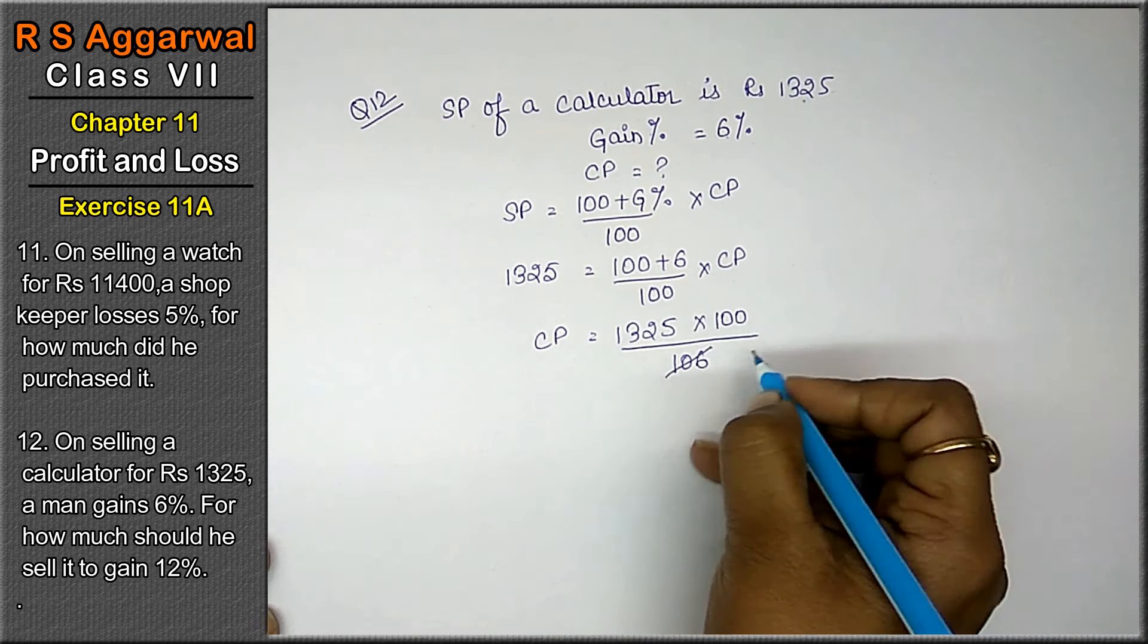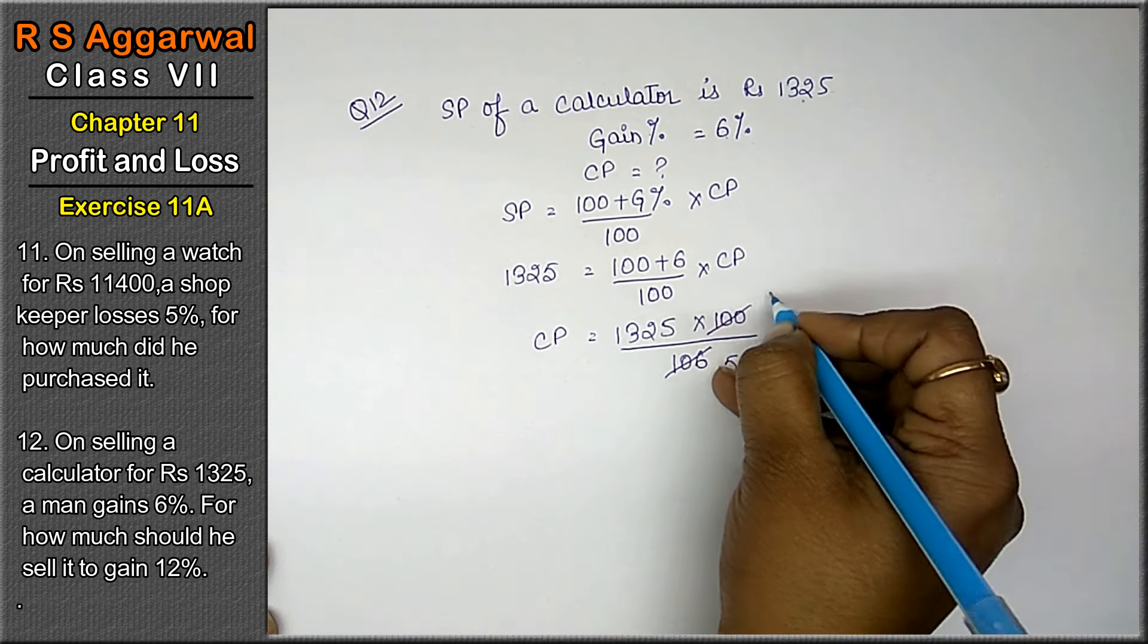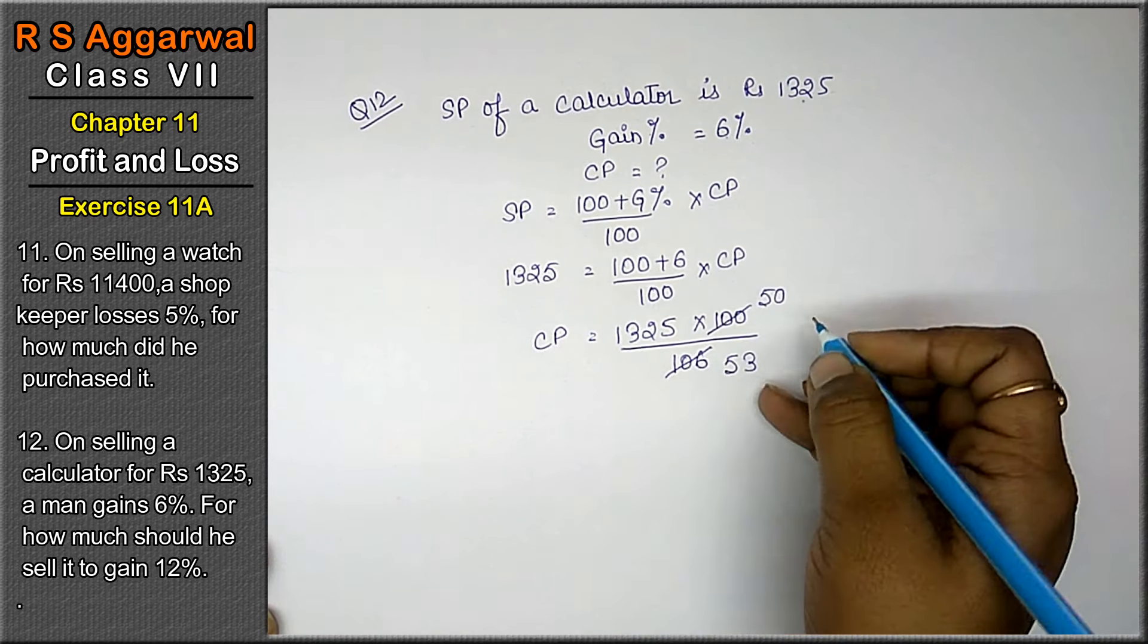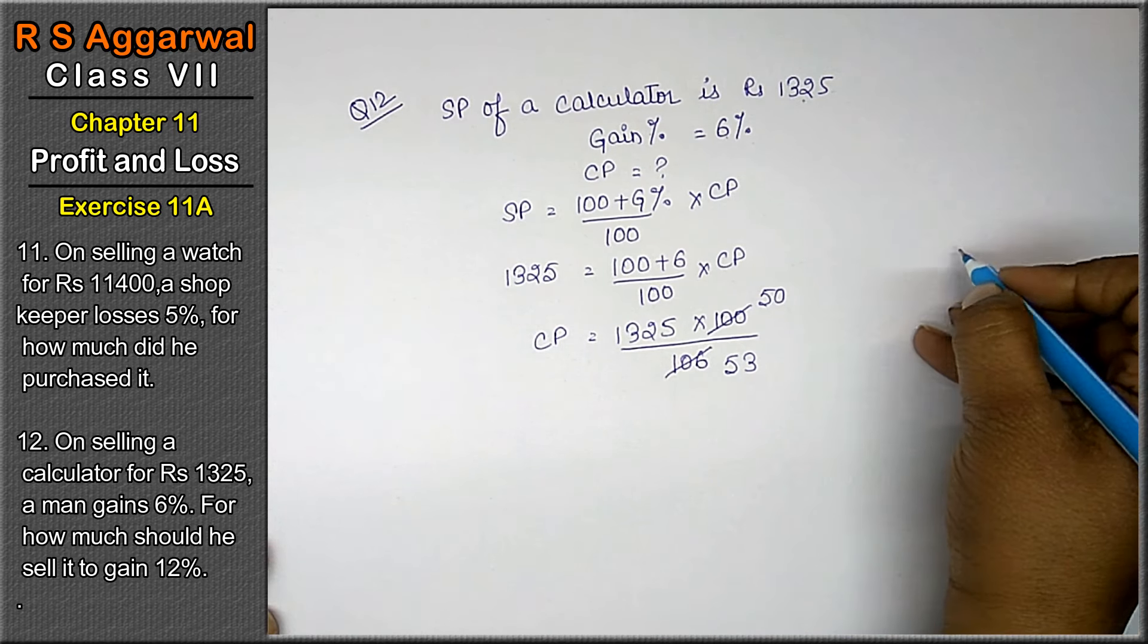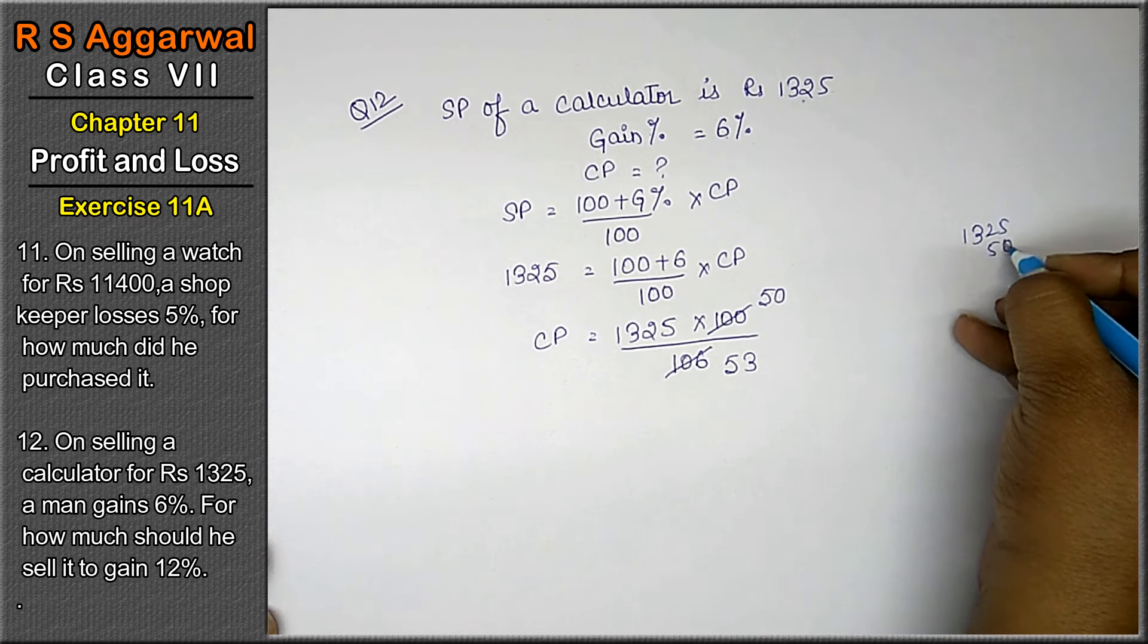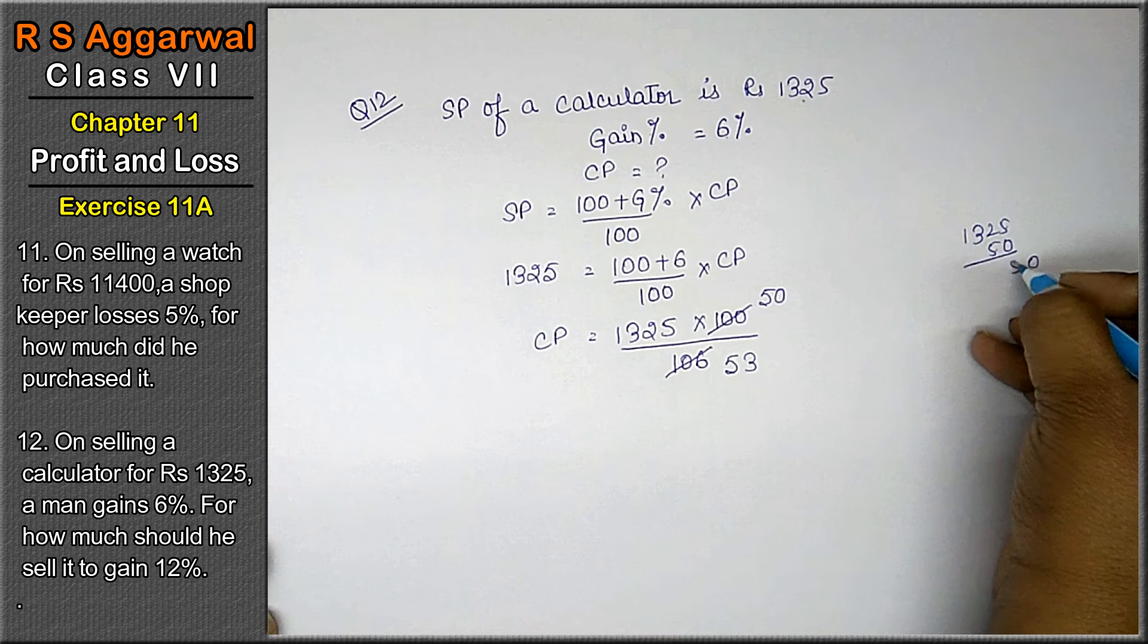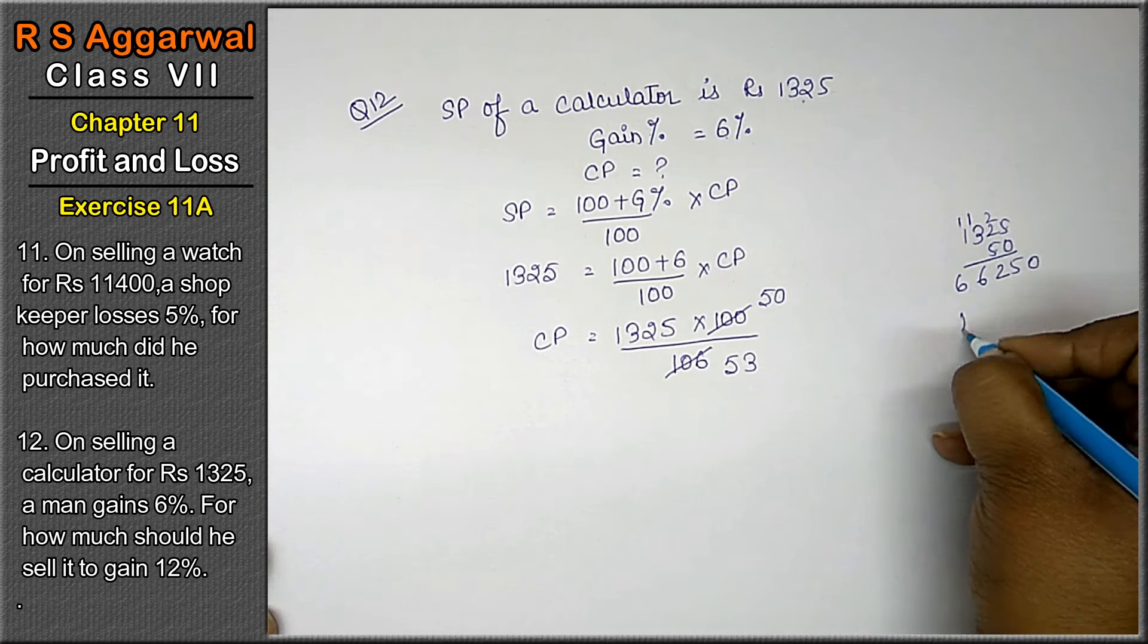Now, 2 × 5 is 10, 2 × 3 is 6, 2 × 5 is 10 and 0. Now we'll divide by 53. First we'll multiply 1,325 into 50: 0 as it is, 5 × 5 is 25, 5 × 2 is 10, 11, 12, 5 × 3 is 15, 16, 5 × 1 is 5 and 6.